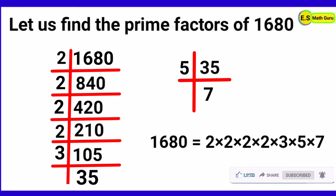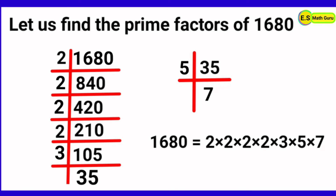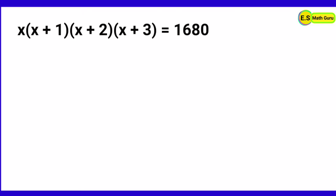Therefore the prime factors of 1680 are 2 × 2 × 2 × 2 × 3 × 5 × 7. Now let us replace 1680 with its prime factors. According to the problem, x(x+1)(x+2)(x+3) = 1680.